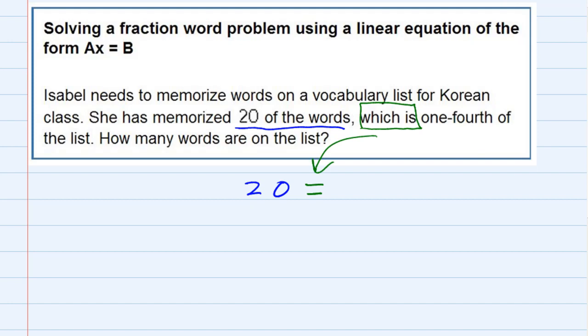And then which is what? Let's see, one fourth of the list. So that's going to be the other part of my equation, one fourth of the list. I'll use x to represent the list, so it is one fourth of, which means multiply, one fourth of x.